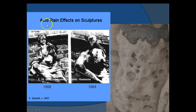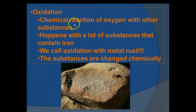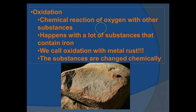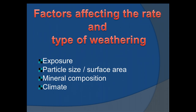Acid rain effects on sculptures are dramatic — you can see clear facial details in 1908, but by 1969 the face is unrecognizable. Oxidation is basically rusting. The surface of Mars is highly oxidized, which suggests it probably had water covering its surface at some point. Mars likely has rocks containing iron; water reacted with them chemically, oxidizing the material and changing it into something completely different.